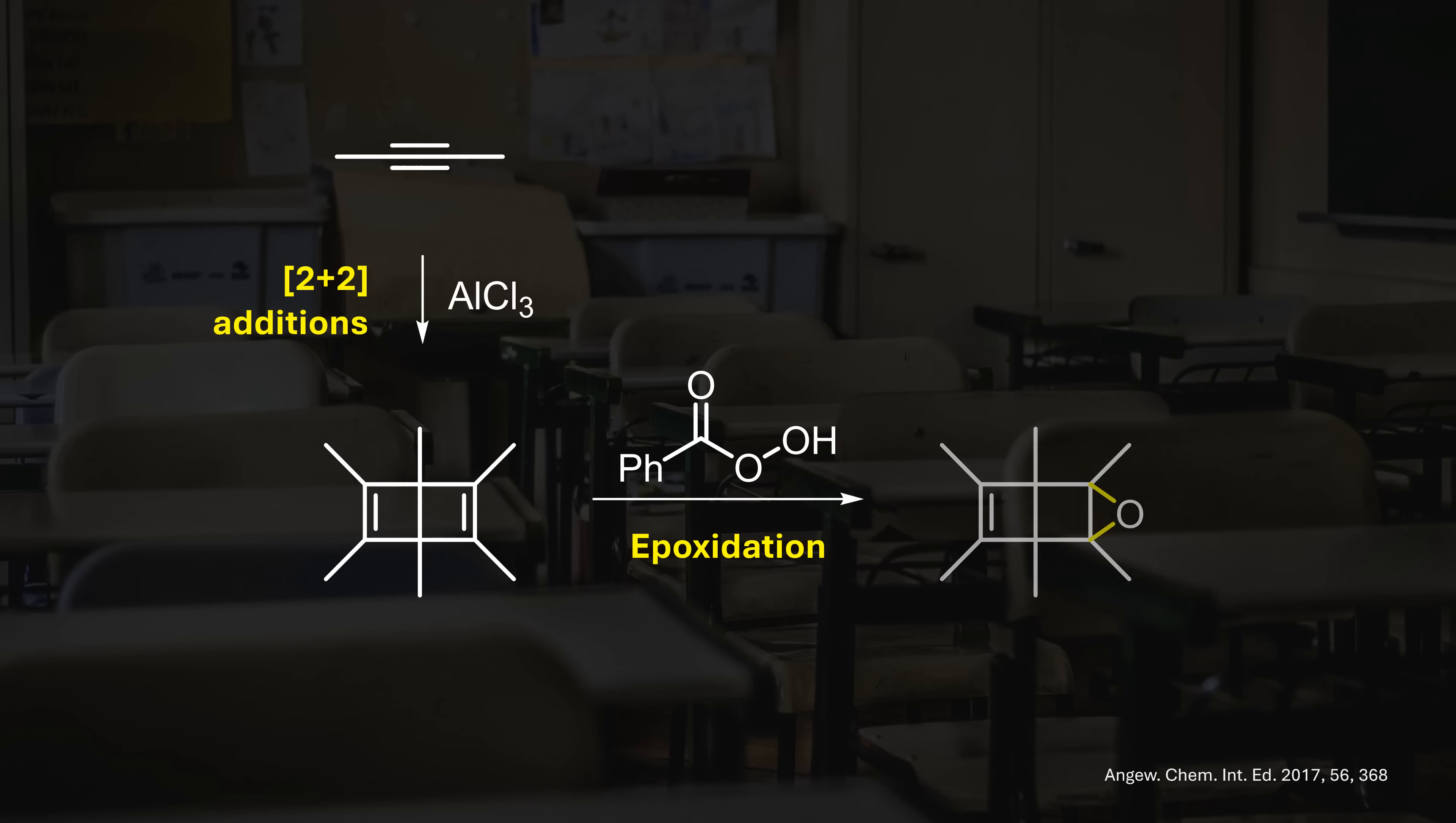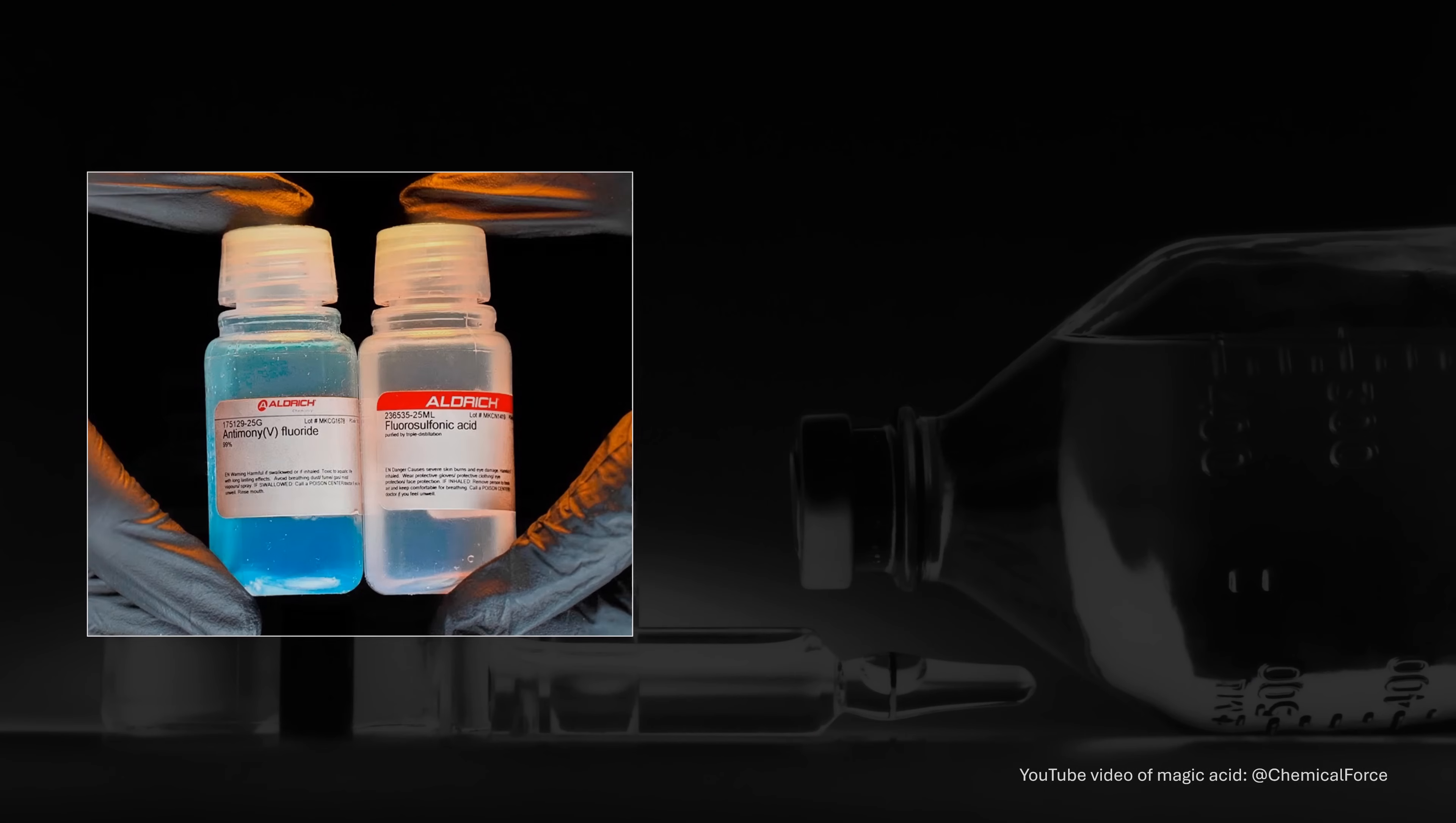Oxidizing one of the double bonds is pretty simple, with one equivalent of perbenzoic acid delivering the epoxide. If we count the atoms, we simply need to remove O2- to get to the correct sum formula. This calls for magic acid.